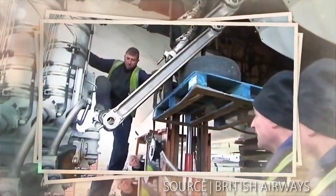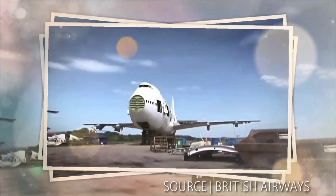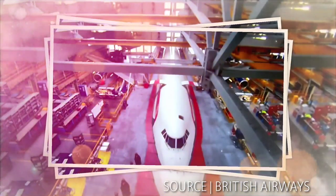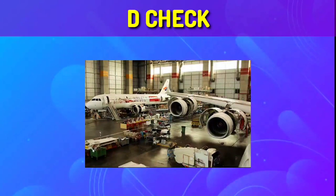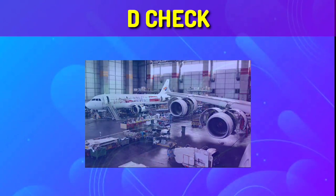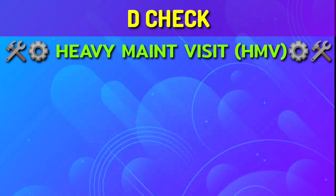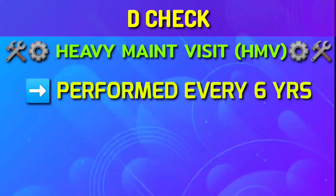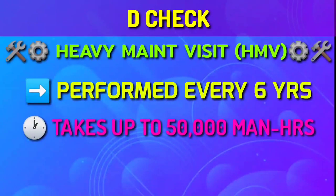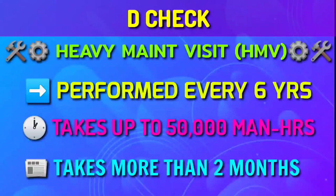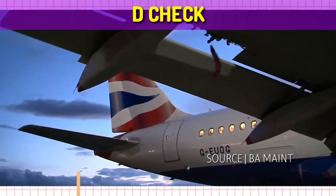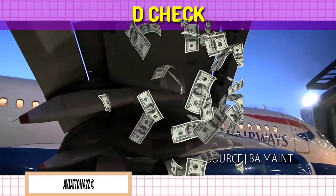Moving on to the major check — D check. This check improves service life of aircraft by years as it involves complete disassembly of an aircraft — it is like a rebirth. D check is by far the most comprehensive and demanding check for an airplane, also known as Heavy Maintenance Visit, occurring approximately every six years. Complete stripping of the aircraft takes place — even paint needs to be removed for further inspection of the fuselage metal skin. Such checks can take up to 50,000 man-hours and more than two months to complete, require the most space of all maintenance checks, and are mandatory to perform at base. The tremendous effort involved makes it far more expensive, costing millions of dollars to airlines.